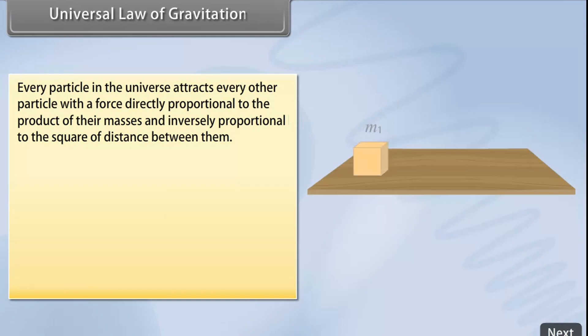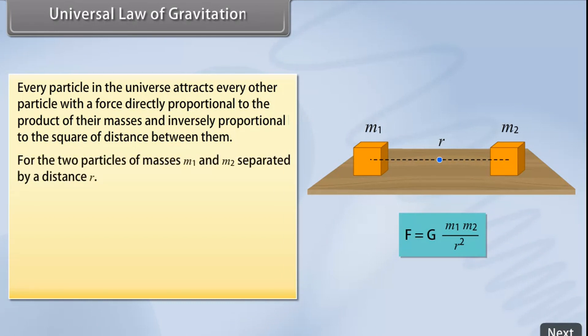Universal Law of Gravitation: According to Newton's Law of Gravitation, every particle in the universe attracts every other particle with a force directly proportional to the product of their masses and inversely proportional to the square of distance between them. The direction of this force is along the line joining the two particles. For two particles of masses M1 and M2 separated by a distance R, F is equal to G M1 M2 upon R square. The constant G is called Universal Constant of Gravitation.